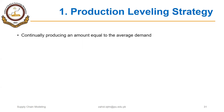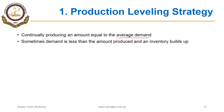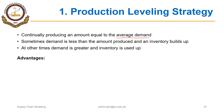First, production level strategy. As the name implies, we are continually producing an amount equal to average forecast demand. Practically, sometimes the demand will be less than this amount and we will be building up some inventory. At other times demand might be greater and inventory is used up. We will see some details of this strategy in the following slide.